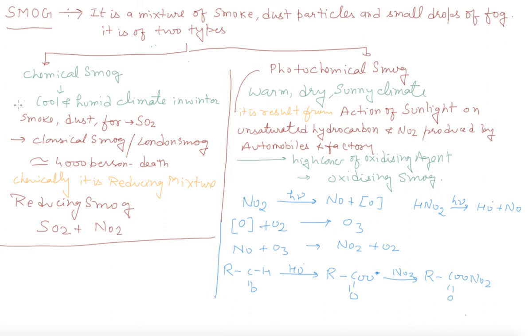Number one is classical smog, and number two is photochemical smog. Classical smog exists or is found in cool and humid climates in winter, and it mainly contains smoke, dust, and SO2.